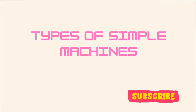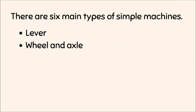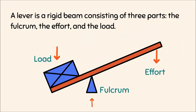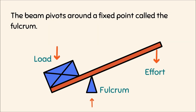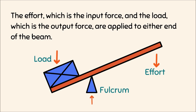There are six main types of simple machines: lever, wheel and axle, pulley, inclined plane, wedge, and screw. A lever is a rigid beam consisting of three parts: the fulcrum, the effort, and the load. The beam pivots around a fixed point called the fulcrum. The effort, which is the input force, and the load, which is the output force, are applied to either end of the beam.